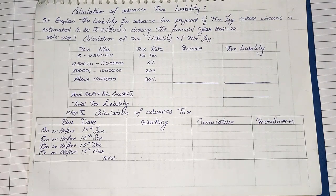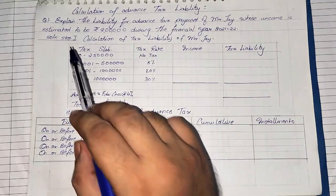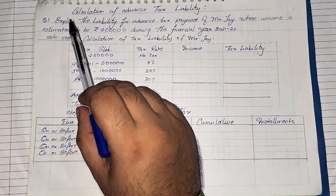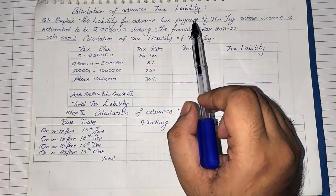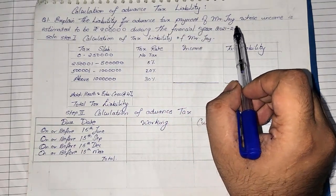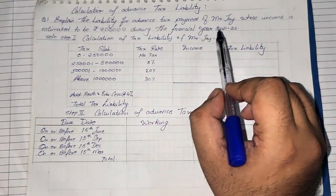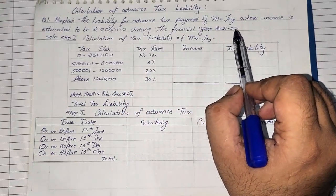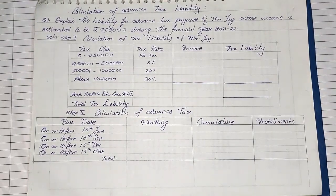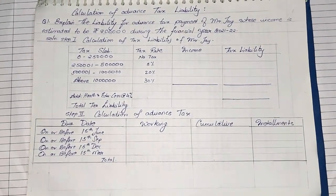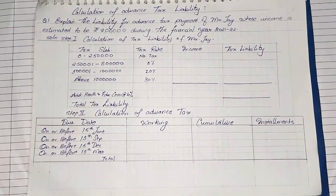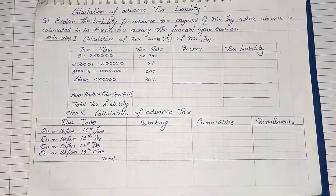Now let us see how to calculate and solve sums asking us to find advanced tax liability. The question given is: explain the liability for advanced tax payment of Mr. J, whose income is estimated to be rupees 8 lakhs during the financial year 2021–22. Based on that we need to calculate the advanced tax liability.